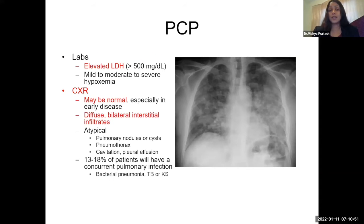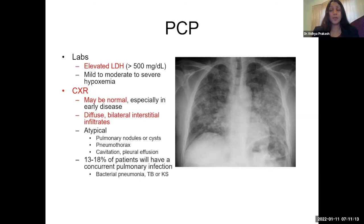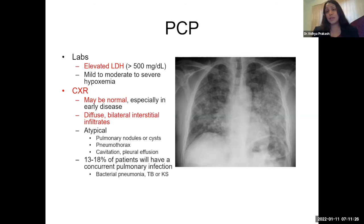Elevated LDH is a huge clue that you may be dealing with PCP — generally on the order of 500. You'll have moderate to severe hypoxemia. Chest X-ray, like the physical exam, may be normal — so don't exclude pneumonia based solely on those findings. When abnormal, you'll typically see diffuse bilateral interstitial infiltrates. Even if the chest X-ray is normal, a CT will the majority of the time be abnormal.